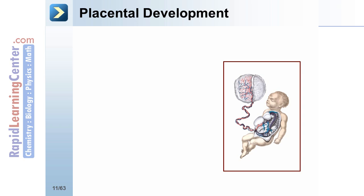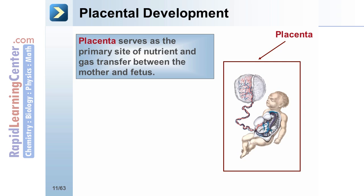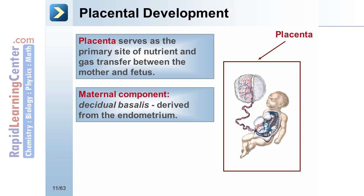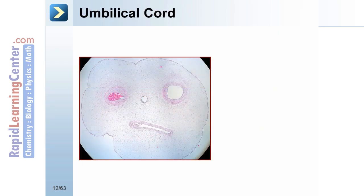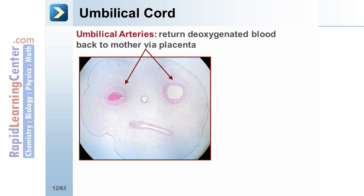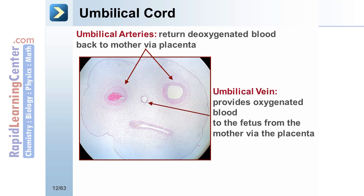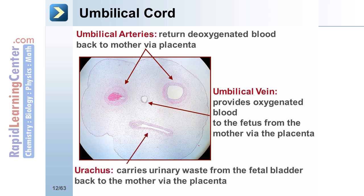Irrespective of the number of embryos, the placenta serves as the primary site of nutrient and gas transfer between the mother and fetus. The maternal component is made up of the decidual basalis, which is derived from the endometrium. The fetal component is composed of two layers: the inner cytotrophoblast cells, which develop into chorionic villi, and the syncytiotrophoblast, which secretes HCG. Umbilical cord circulation consists of two umbilical arteries that return deoxygenated blood back to the mother via the placenta, one umbilical vein that provides oxygenated blood to the fetus, and the urachus, which carries urinary waste from the fetal bladder back to the mother via the placenta.